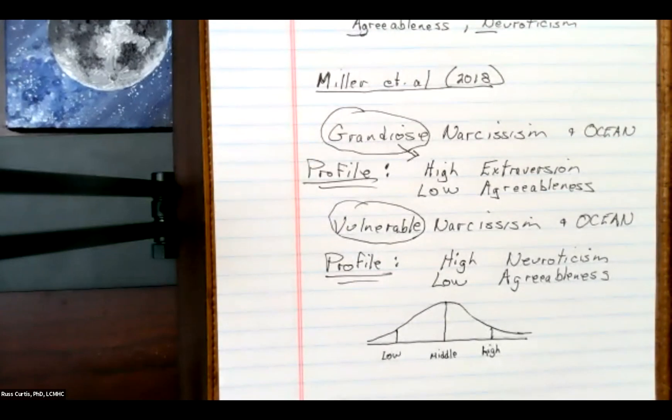All right, so for vulnerable narcissism and using the ocean to measure, we saw high neuroticism. Okay, you didn't see that here with grandiose. And then low agreeableness.